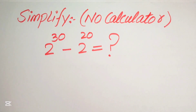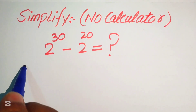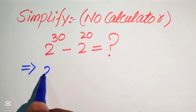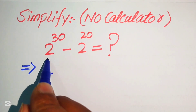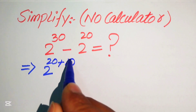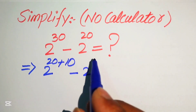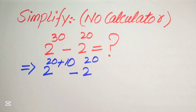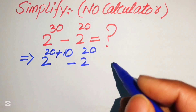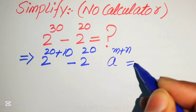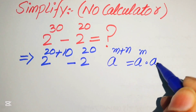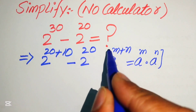The very first step is to focus on the exponent of the first term. The exponent of 2 is 30, so we write this 30 as 20 plus 10, minus 2 to the power of 20. Now we use the exponent law: if we have a to the power of m plus n, it equals a to the power of m multiplied by a to the power of n.